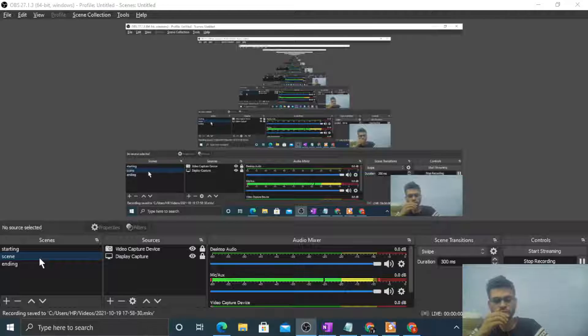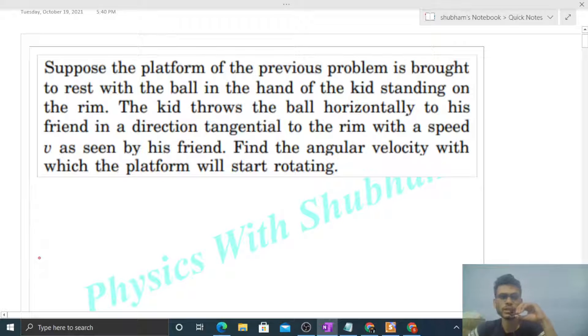Okay, hi everyone, so today let's discuss this interesting problem. It says suppose the platform of the previous problem is brought to rest with a ball in the hand of the kid standing on the rim. The kid throws the ball horizontally to his friend in a direction tangential to the rim with a speed v as seen by his friend.